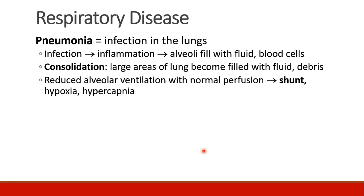Pneumonia is an infection in the lungs. A bacterial infection, or even a viral infection sometimes, leads to inflammation in the lungs, and then the alveoli start to fill with fluid and blood cells, until we get what's called consolidation, where large areas of the lung become filled with fluid and debris. You can imagine these patients have reduced alveolar ventilation — they still have normal perfusion — and so this is shunt, and patients become hypoxic and hypercapnic.